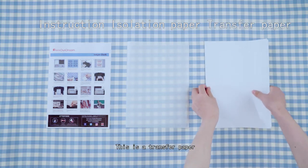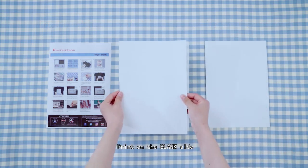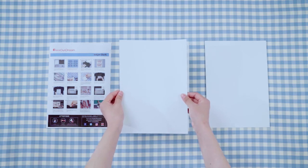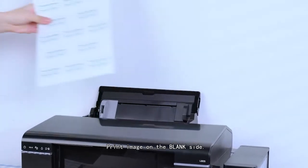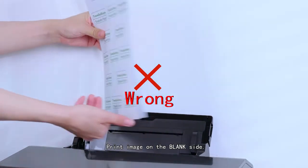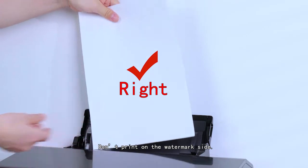This is a transfer paper. Print on the blank side. Brand name is on the back side. Print image on the blank side. Don't print on the watermark side.